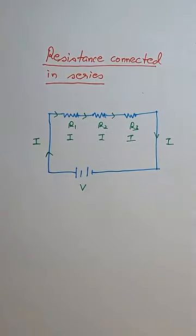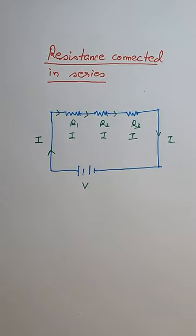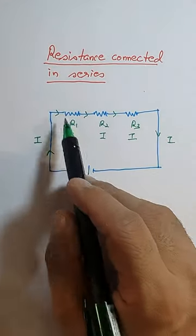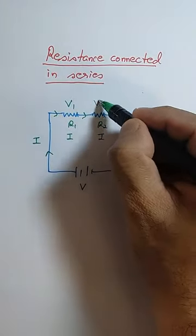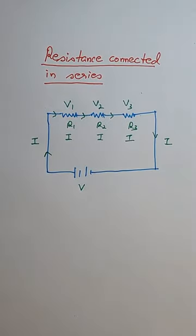So in series, the same current flows through it. Now if you see, all these resistances have different end points, so the potential will be divided. This will be V1, V2, and V3, and the total potential V.